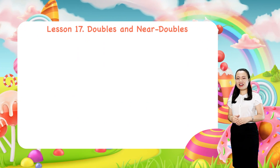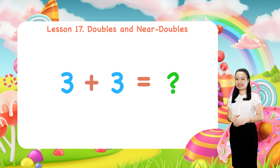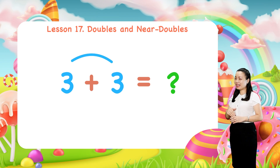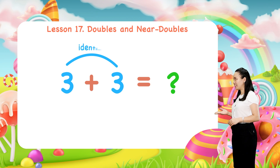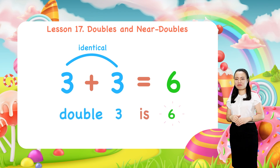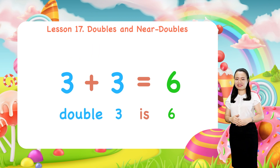Now, look at this addition: 3 plus 3. Notice, these numbers are exactly the same. In other words, they are identical. 3 plus 3 equals 6. We say, double 3 is 6. When two identical numbers are added together, we say, add doubles.